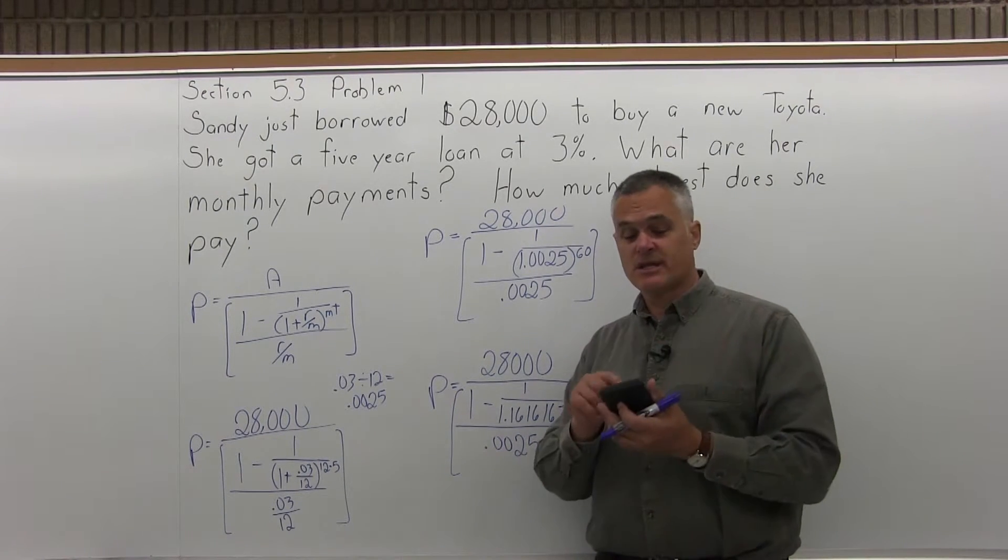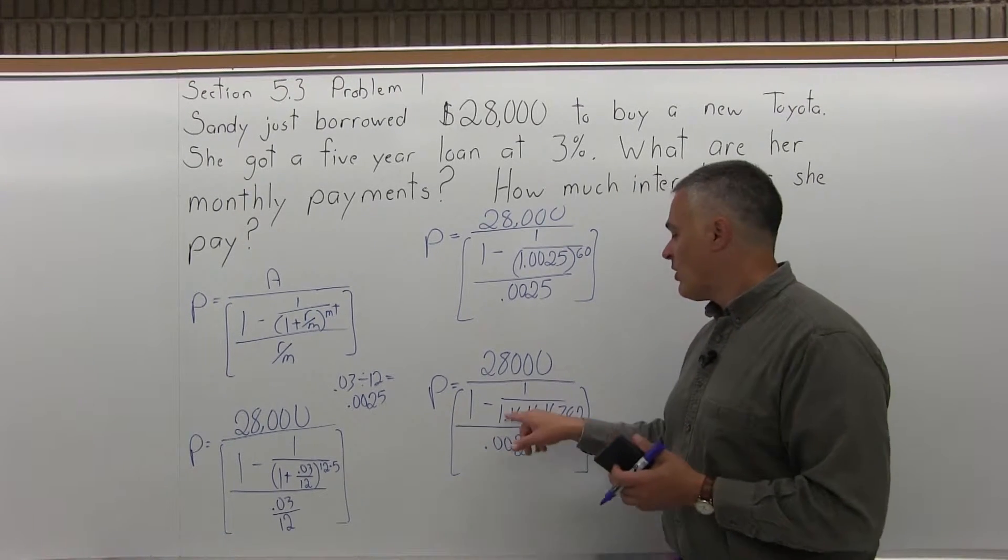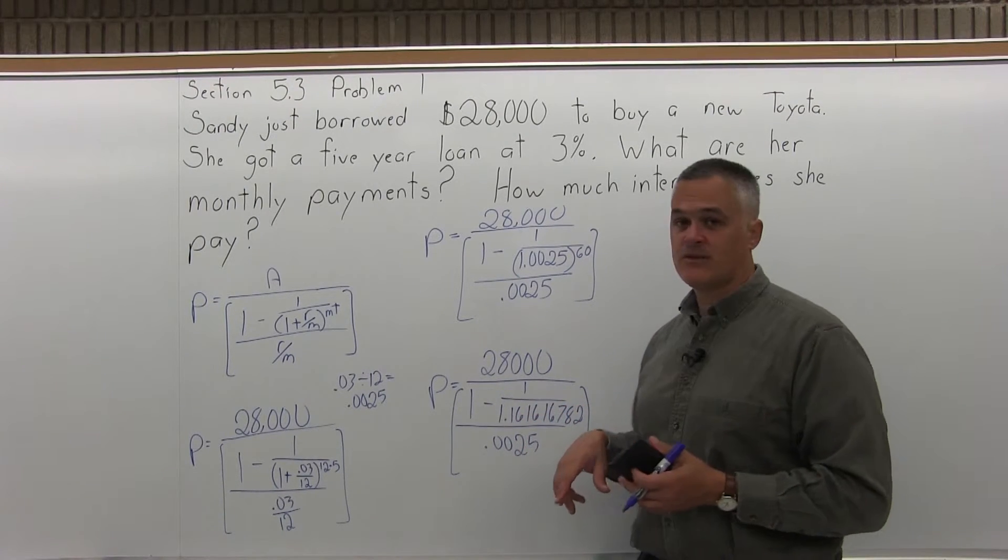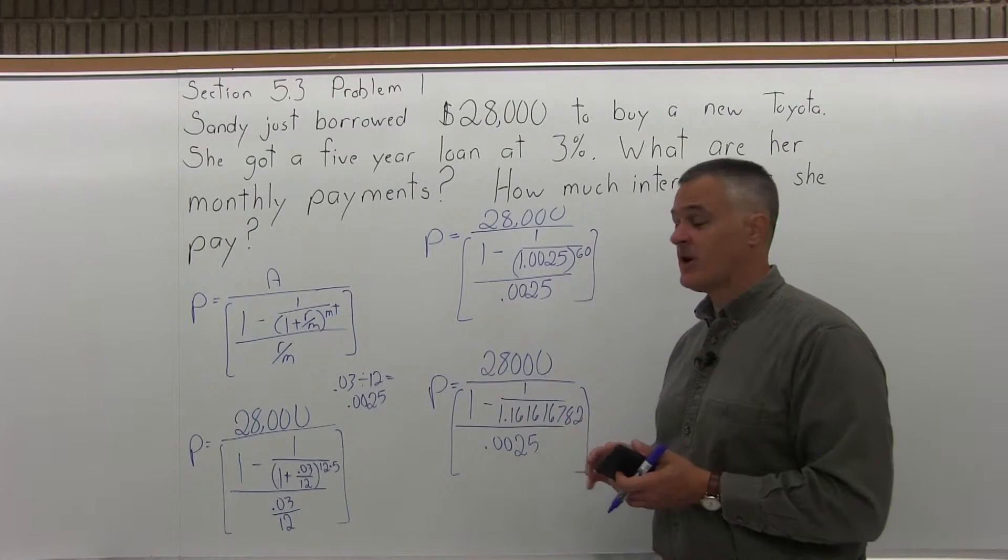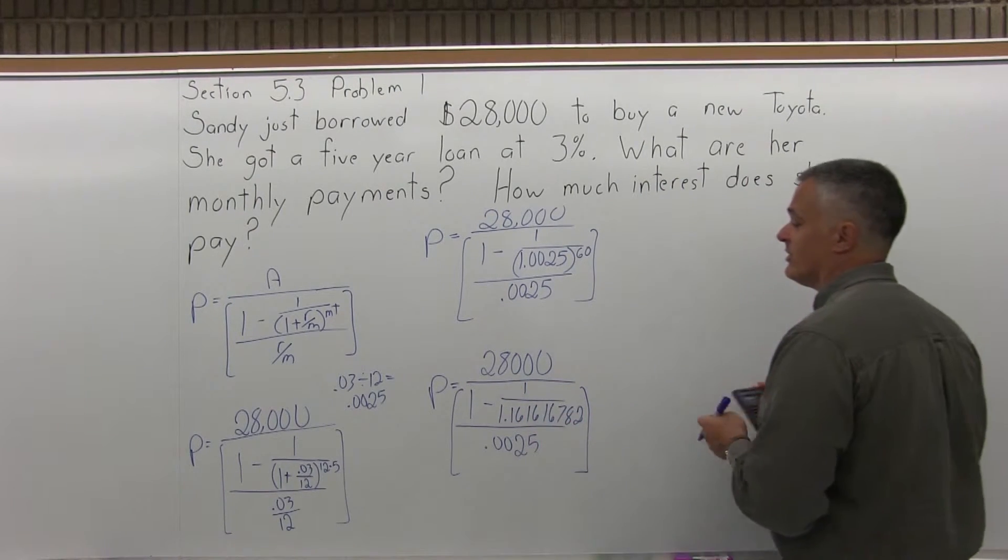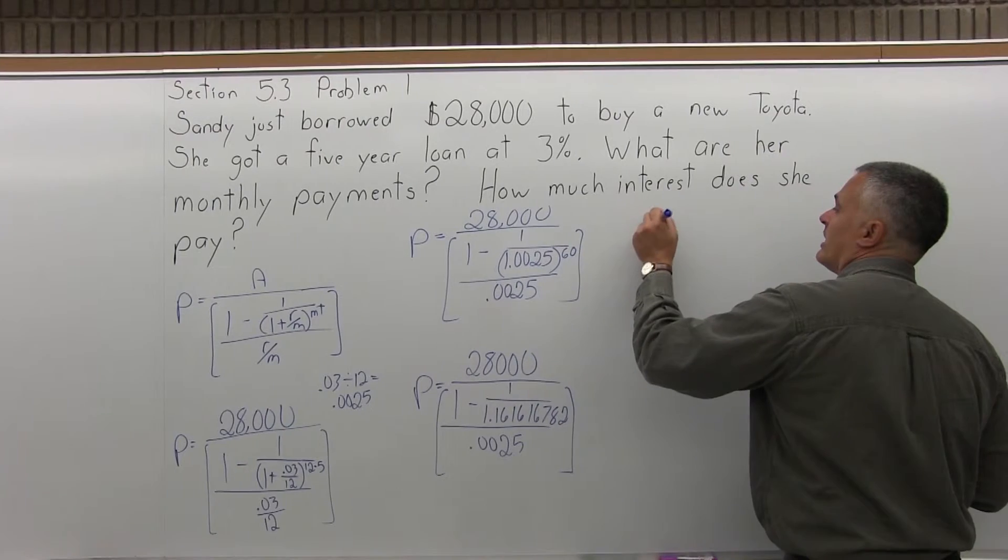Also most scientific calculators have a button that says 1 over x. While the 1.161616782 is on the screen, if you press 1 over x, it'll do the 1 divided by it automatically. That's actually how I'll do it. So when I do that,